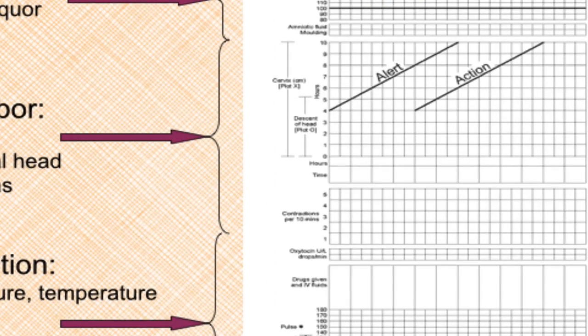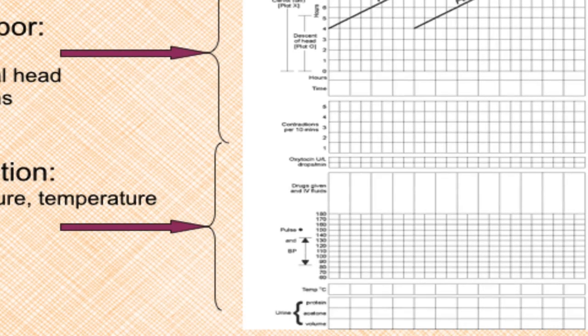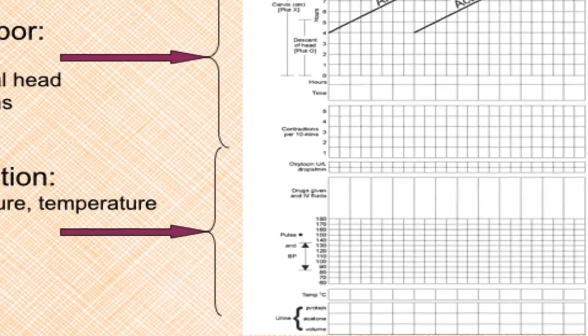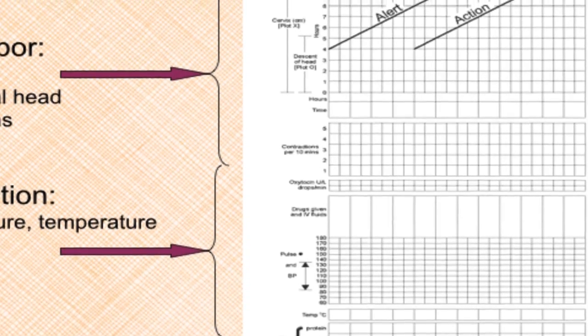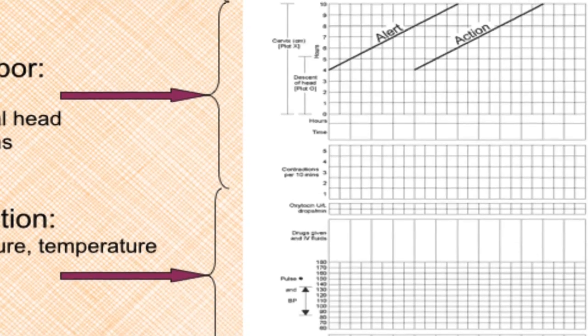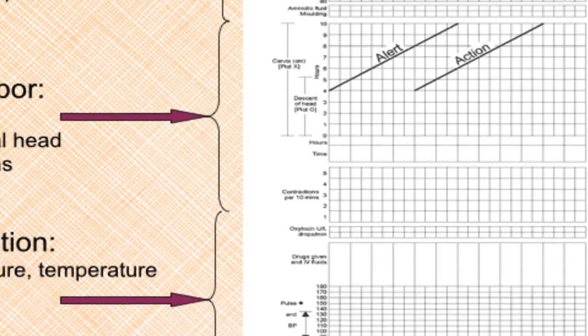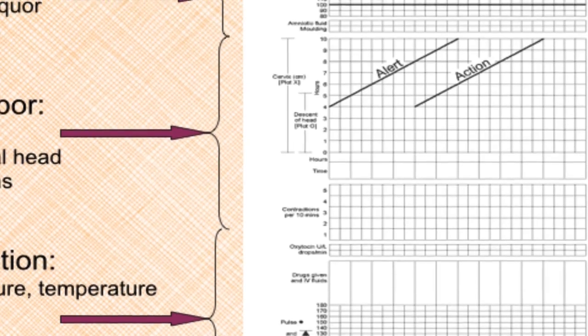The progress of labor is represented in the middle. It comprises cervical dilatation, descent of fetal head, and uterine contractions. Their duration and frequency for 10 minutes.